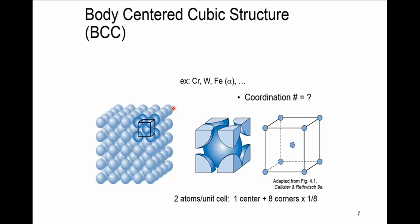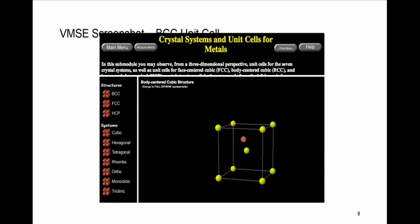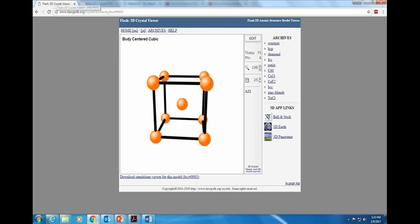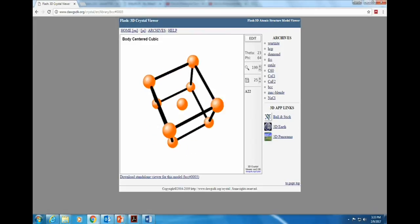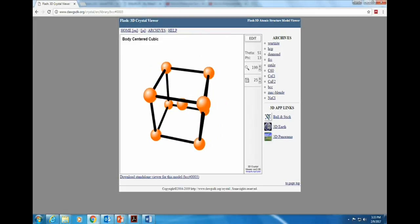The coordination number of BCC can be proved to be 8. For the number of atoms, each corner atom contributes 1/8, giving 1 from the corners, plus 1 atom in the center, making 2 atoms per unit cell. You can explore how this looks using Wiley Plus or a free online visualization tool, where you can rotate the BCC structure, change its size, and adjust the viewing angle.